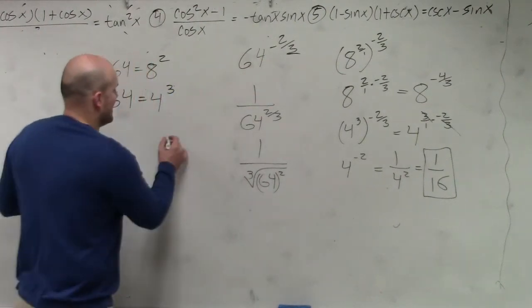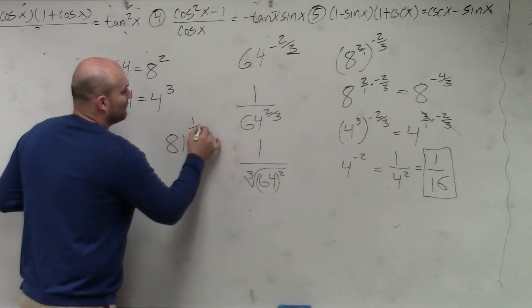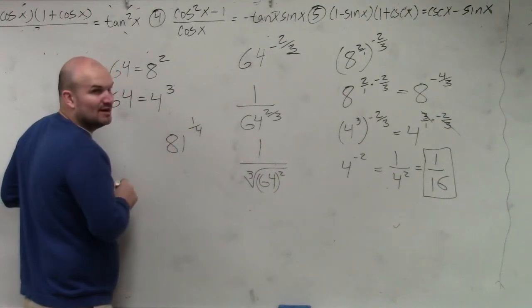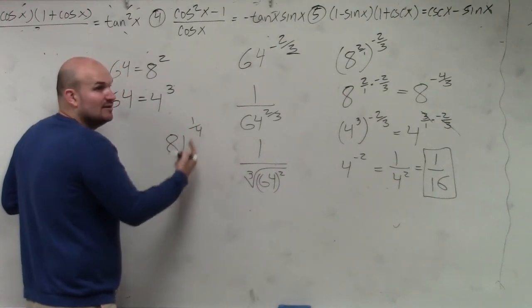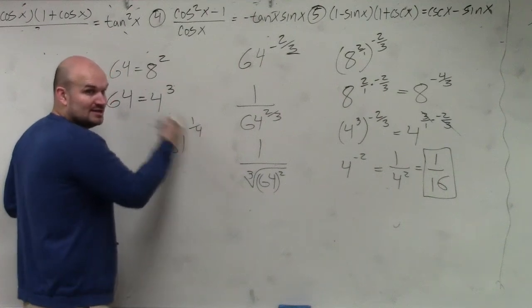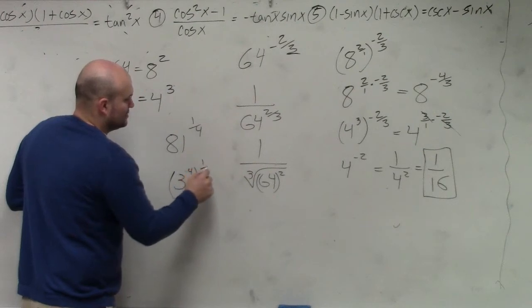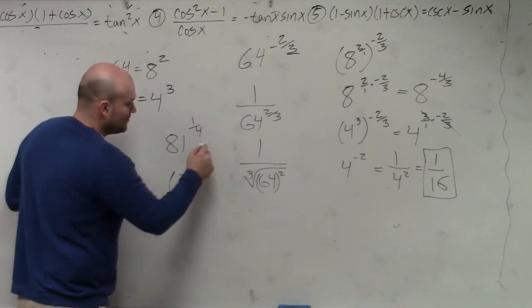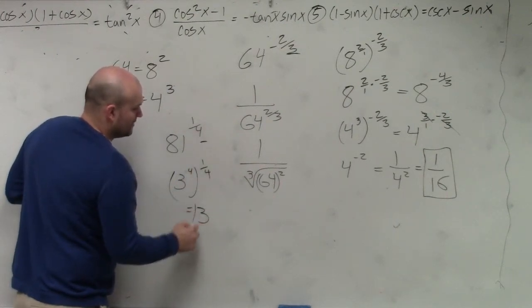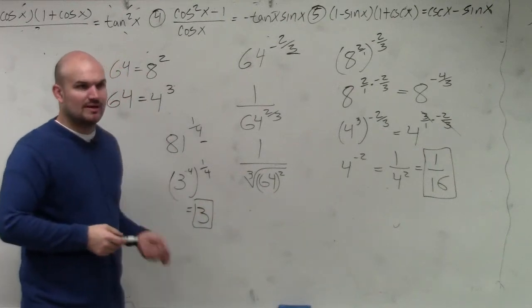So for instance, if I had 81 to the 1 fourth power, what would I want to write 81 to? I want to write a number to the fourth power, right? So the 4s would divide out, which this is 3 to the fourth power to the 1 fourth, which is equal to 3. Answer, done. See how quick that was?